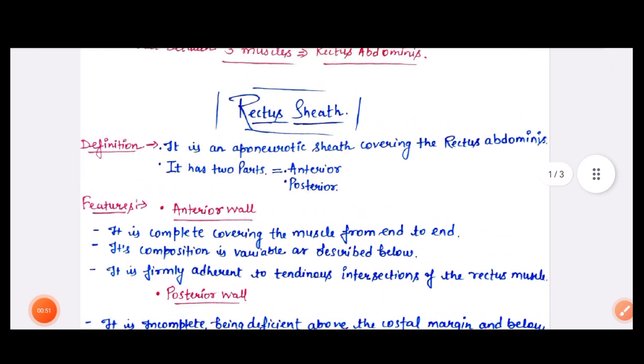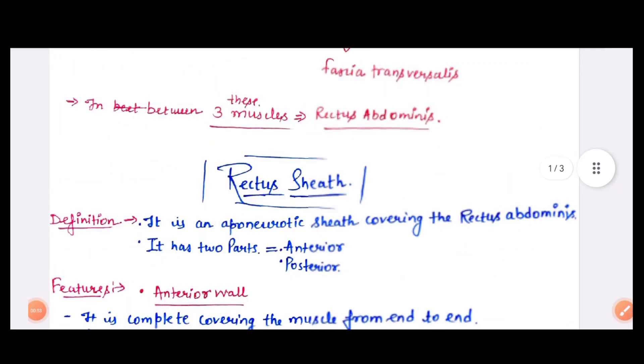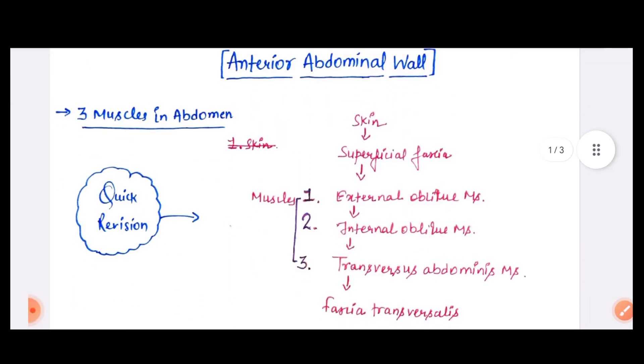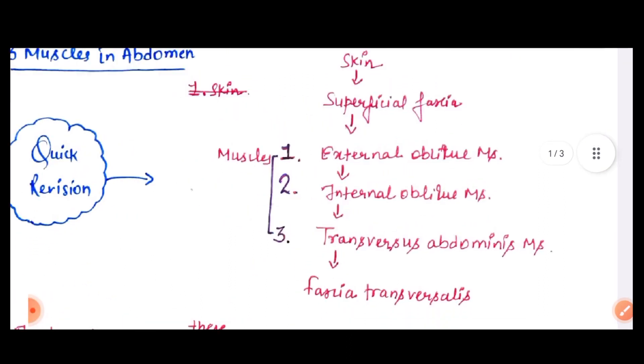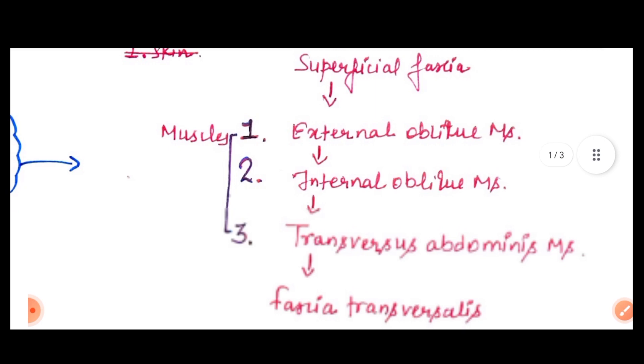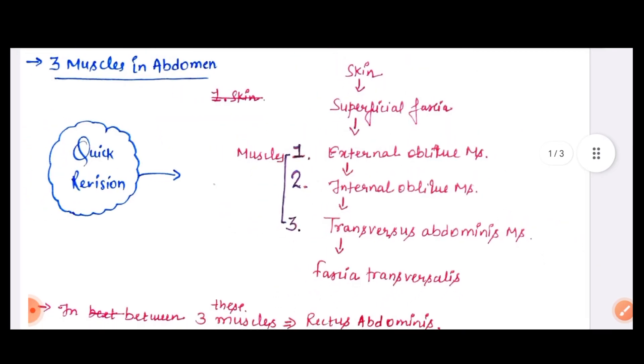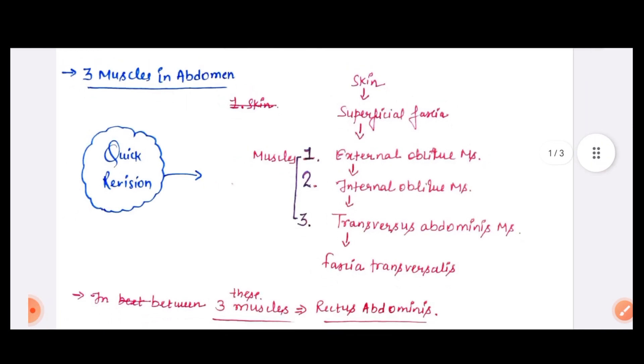Hello everyone, welcome back to my YouTube channel. I'm Shelly Sharma, MBBS. Today I'm here to discuss an important topic of anatomy: the abdomen rectus sheath. Before starting with the rectus sheath, let us take a quick revision of the anterior abdominal wall. As we know, there are three muscles in the abdomen: external oblique, internal oblique, and transverse abdominis muscle.